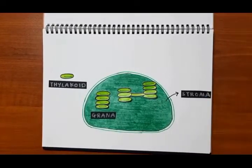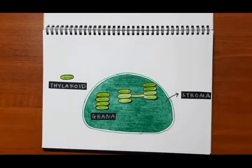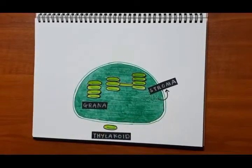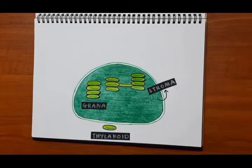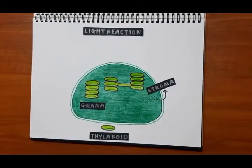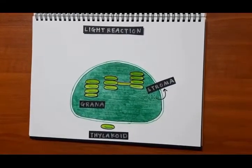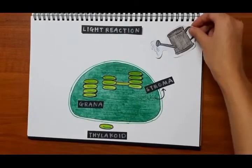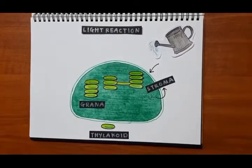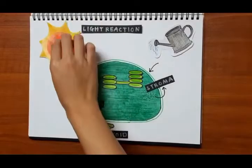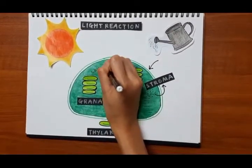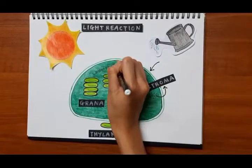During daytime, plants undergo the light reaction. The light reaction is the first stage of photosynthesis. This reaction needs water and light from the sun. Chlorophyll will absorb light energy from the sunlight.